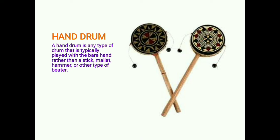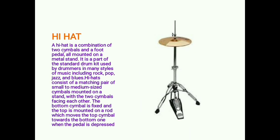The hi-hat is a combination of two cymbals and a foot pedal mounted on a metal stand. It is part of the standard drum kit used by drummers in many styles of music including rock, pop, jazz, and blues. Hi-hats consist of a matching pair of small to medium-sized cymbals mounted on a stand with the two cymbals facing each other. The bottom cymbal is fixed and the top is mounted on a rod; pressing the pedal moves the top cymbal towards the bottom one.